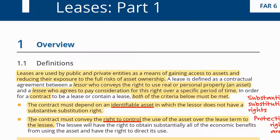For example, when you lease or rent an apartment, can anyone access this apartment without your permission? No. Even the lessor cannot do it. So you have the right to control this apartment — you can decide who's going to use it, when it's going to be used, and most importantly, how it's going to be used. This is the right to control the use of this asset.